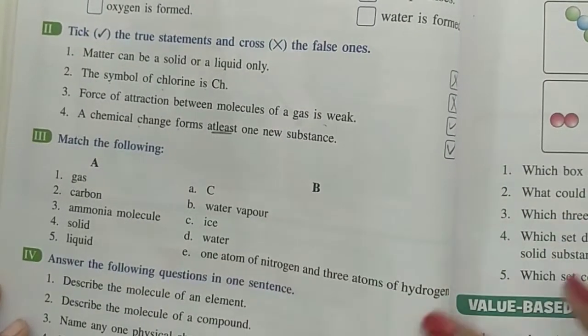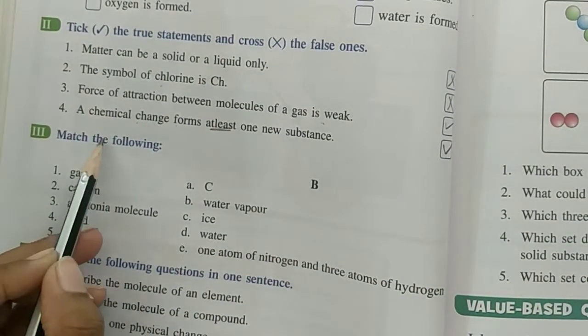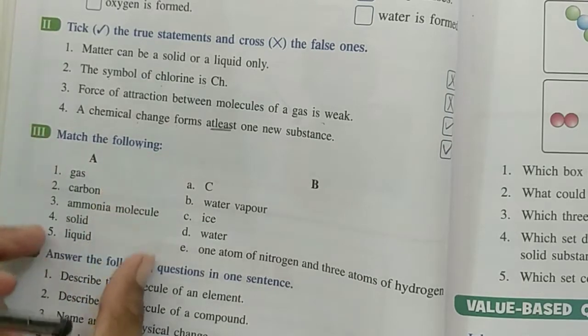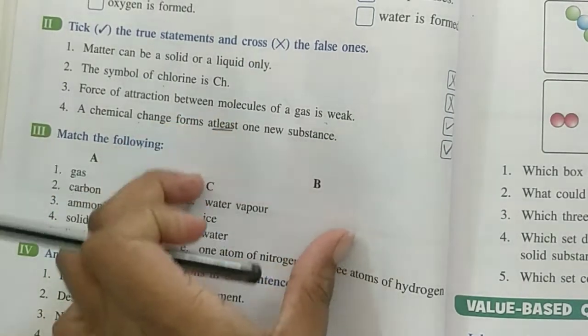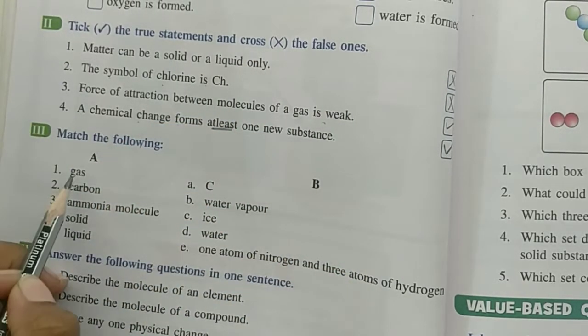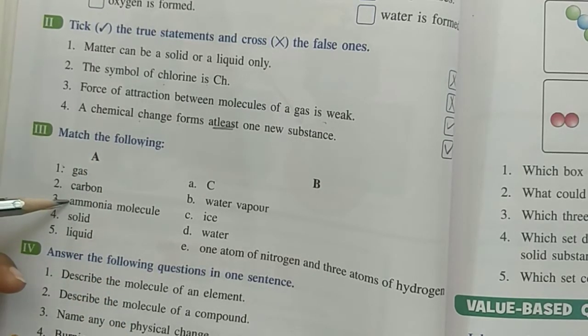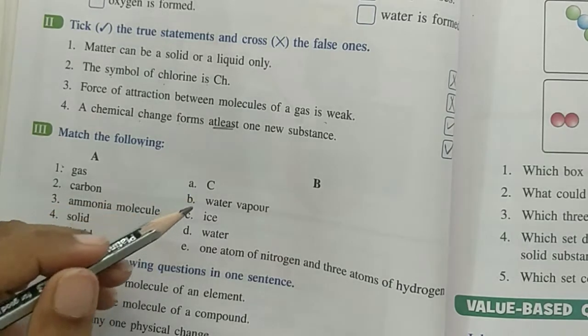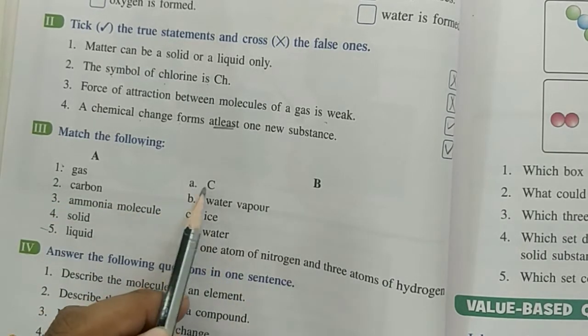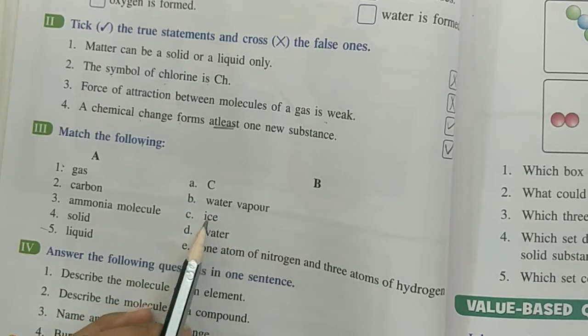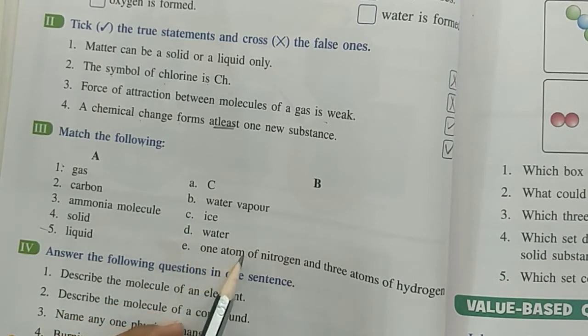Now, question number third. Match the following. Here is A column, here is B column. So we have to match it. Gas, carbon, ammonia molecule, solid, liquid. B column has C 2, water vapor, ice, water, and one atom of nitrogen, three atoms of hydrogen.